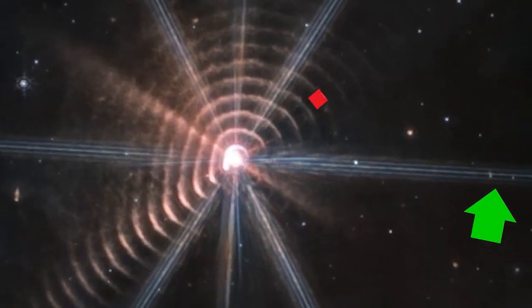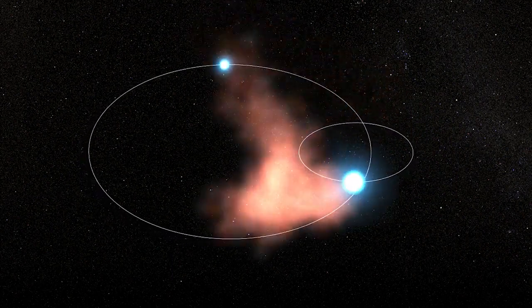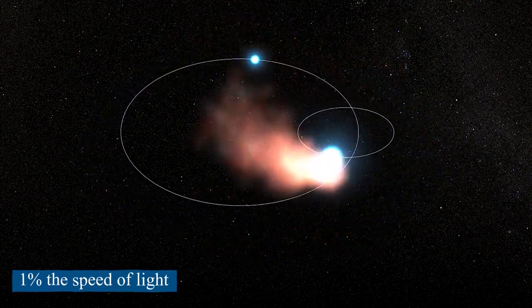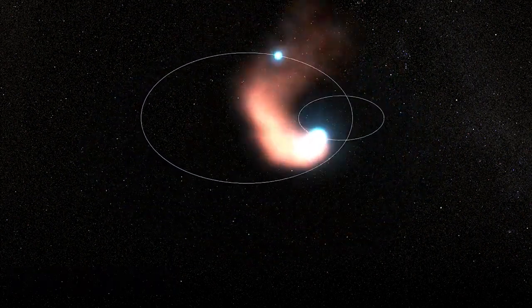The radiation field around Wolf-Rayets is so strong that dust and wind are blown away at about one percent the speed of light, or thousands of kilometers per second.